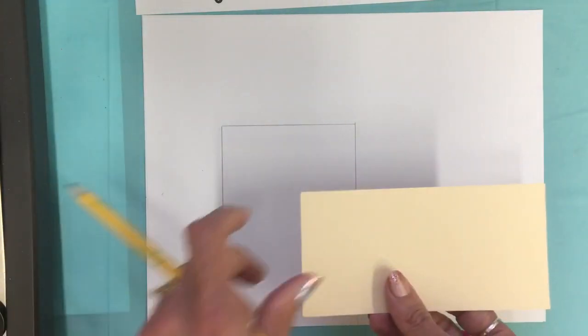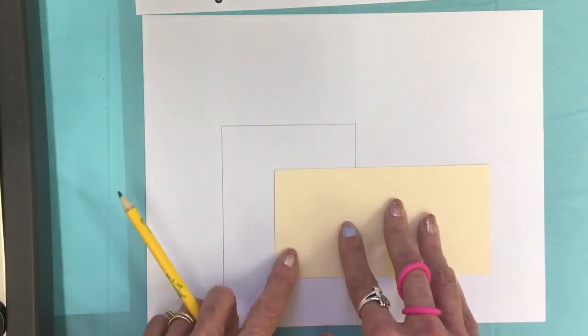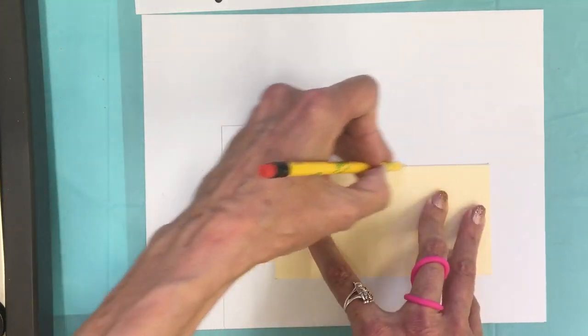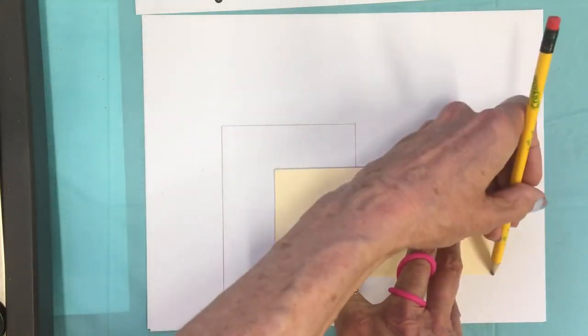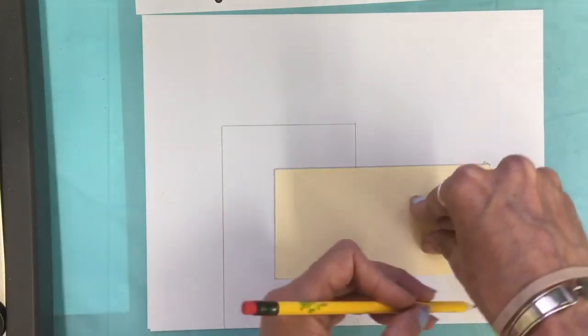I can also use some templates here if I would like. I could pre-cut squares and rectangles or I could find paper that's already cut out in the shape of a square or a rectangle, and I could use those shapes to trace around.